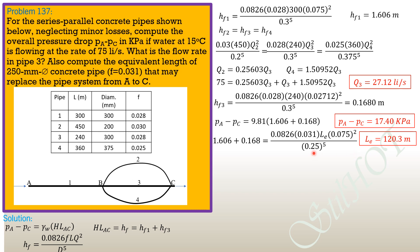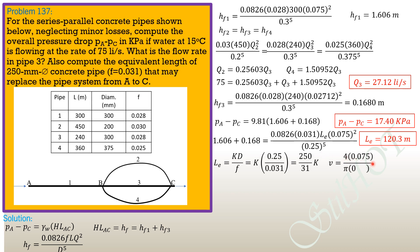An alternative method uses L_eq equals K times D over F, where D is 0.25 and F is 0.031. The mean velocity in the equivalent pipe is 4 times 0.075 over pi times (0.25)², giving 1.528 m/s. The mean velocity in pipe 1 is 4 times 0.075 over pi times (0.3)², giving 1.061 m/s. Therefore V1 over V equals 1.061 over 1.528 equals 0.6944.